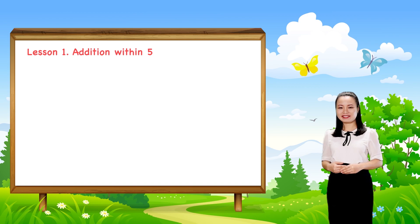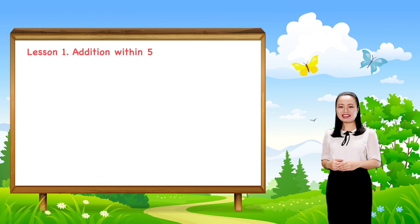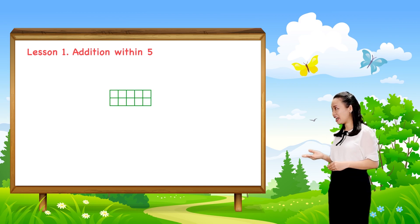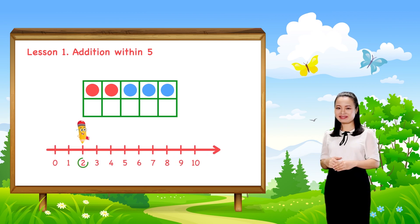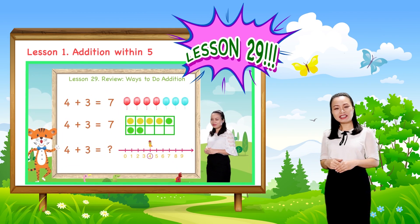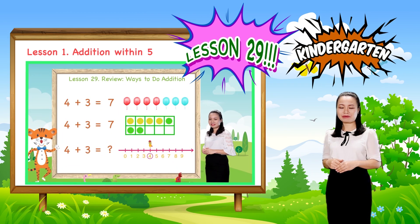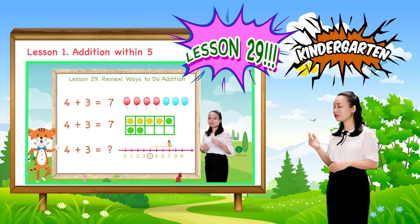There are two other common ways to do Addition. That is to use the 10 frame and the number line. You can watch the video Lesson 29 in kindergarten math class to review ways to do Addition.